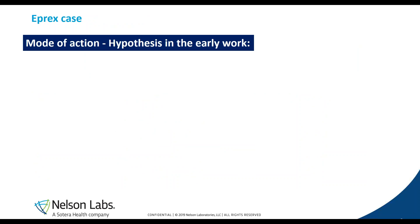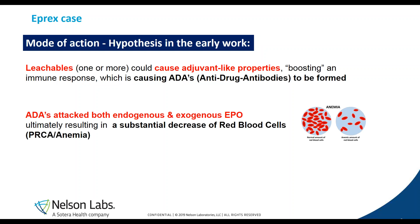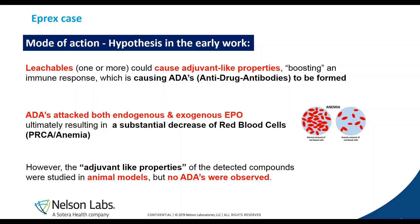In those early days, the hypothesis about the mode of action of these leachables in the new Eprex formulation was that they caused an adjuvant-like property — they boosted the immune response, resulting in the production of anti-drug antibodies. These antibodies were then able to attack not only the administered EPO but also the endogenous EPO produced by the human body, resulting in a substantial decrease of red blood cells — the opposite of the intended effect. They tried to verify this hypothesis in an animal model by administering these leachables to animals, but no anti-drug antibodies were observed, so the hypothesis could not be confirmed.